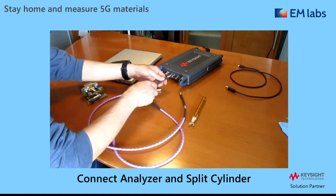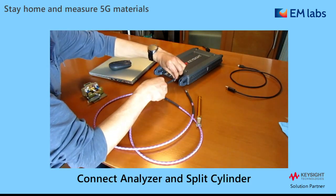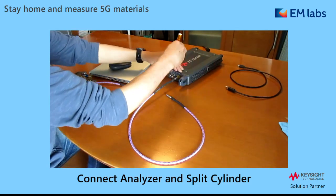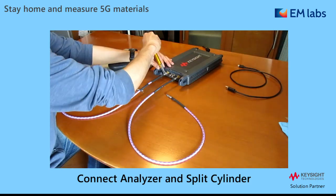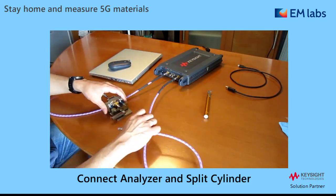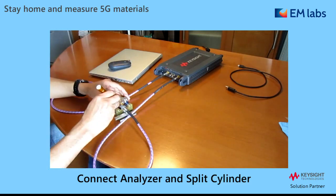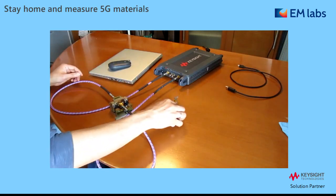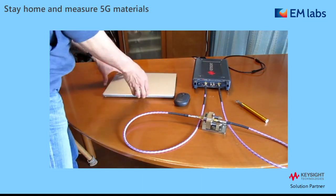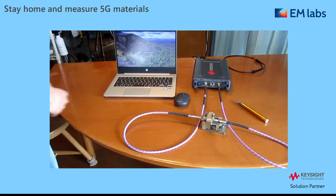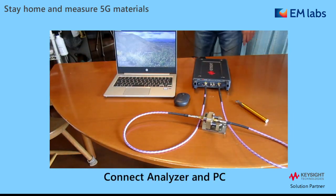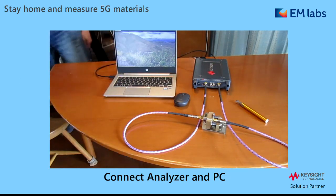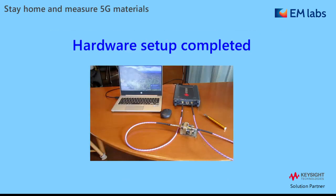First, connect the network analyzer and split cylinder with RF cables. The connection affects measurement results, so I carefully connect using the torque wrench. Digital connection is pretty simple — we just need one USB cable. Hardware setup is completed already.